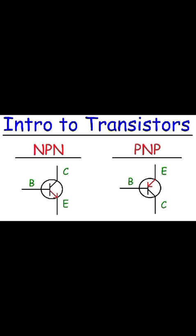The two types of transistor are NPN and PNP. In an NPN transistor, N-type refers to material with more electrons, and P-type refers to material with holes. An NPN transistor has two N-type (thick) layers with a P-type (thin) layer in between. A PNP transistor has two P-type (thick) layers with an N-type (thin) layer in between.